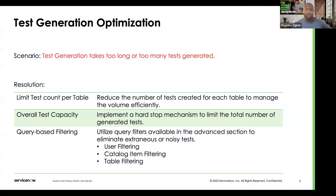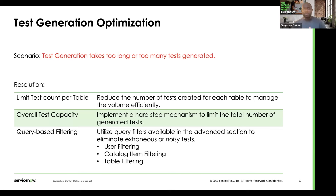The first thing we'll talk about is we've had a couple of customers mention that it takes too long for test generation to get completed or executed. The resolutions from the engineering team: first, limit the test count per table. Second, have an overall test capacity to limit the number of tests that are generated. Third, the query-based field filter. If you're aware of our new updates, you'll see presets based on users of the tables and maybe some service catalog items.